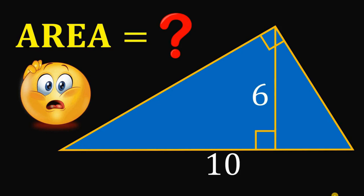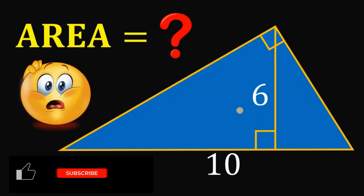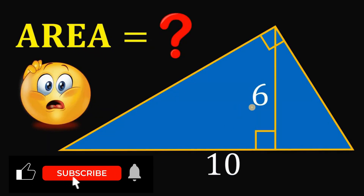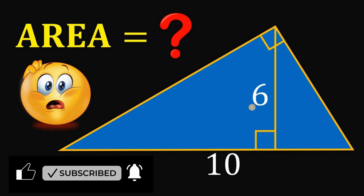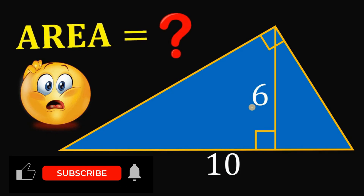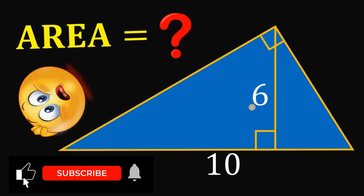Don't watch this video until you have an answer. Here's the question: given a right triangle with a hypotenuse of 10 and a height of 6, what is the area of this triangle?